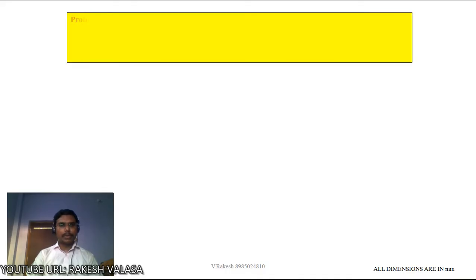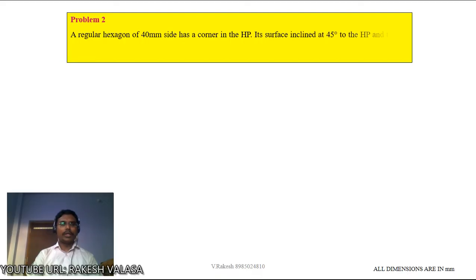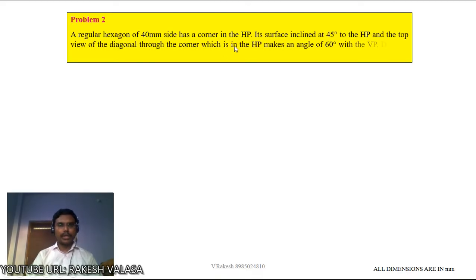The problem: Problem number 2 — a regular hexagon of 40 mm side has a corner in the HP. Its surface is inclined at 45 degrees to the HP, and the top view of the diagonal through the corner which is in the HP makes an angle of 60 degrees with the VP. Draw its projections.